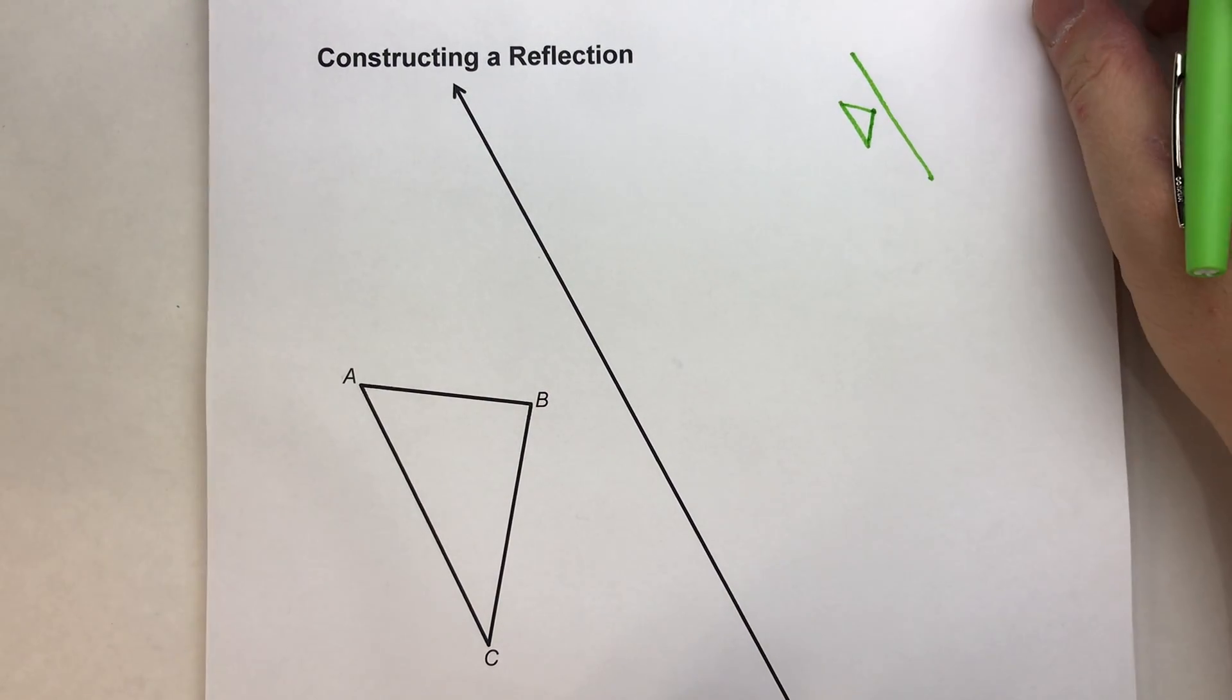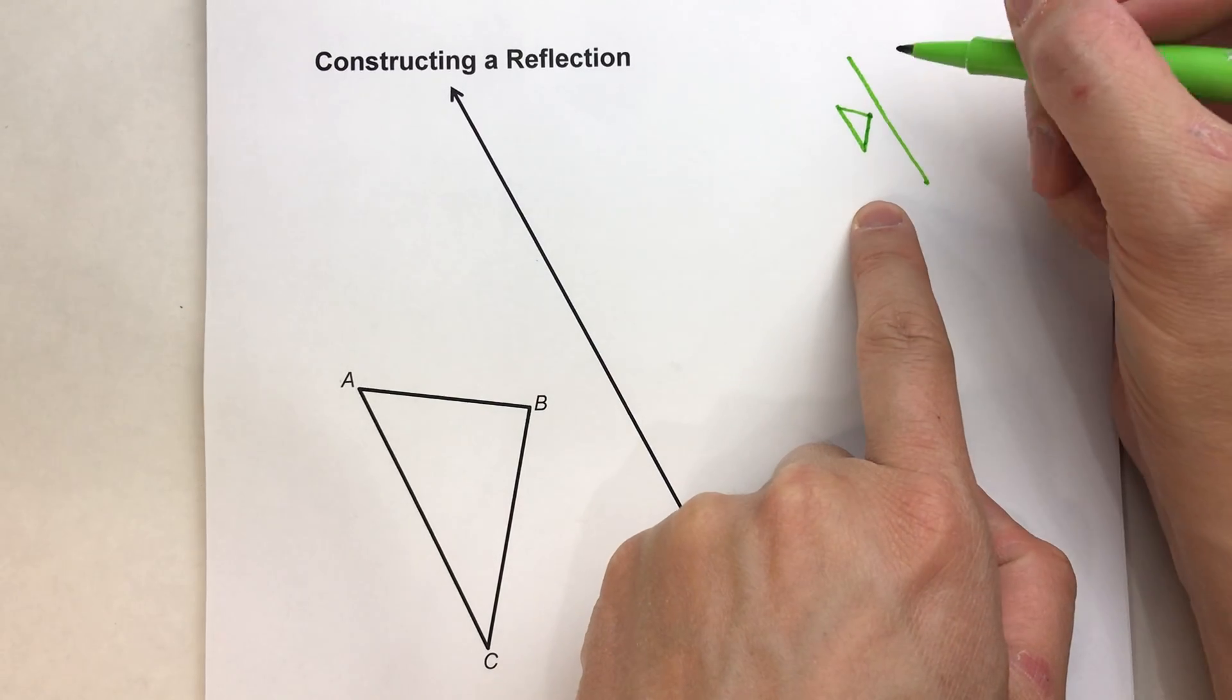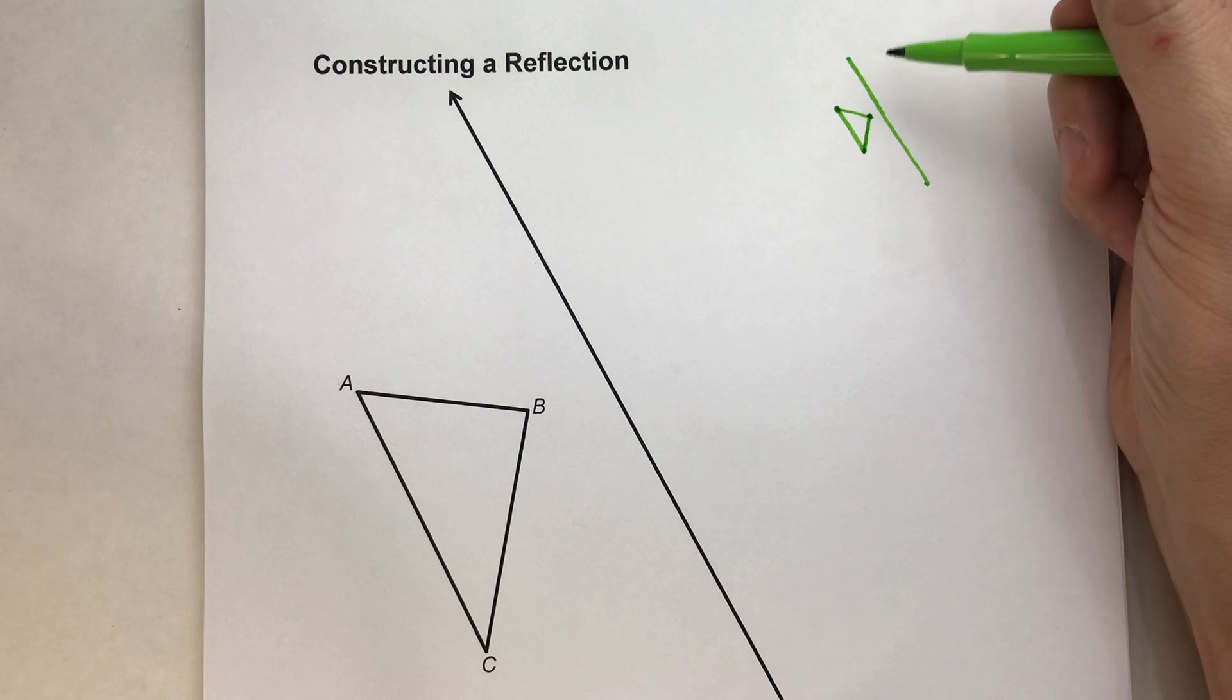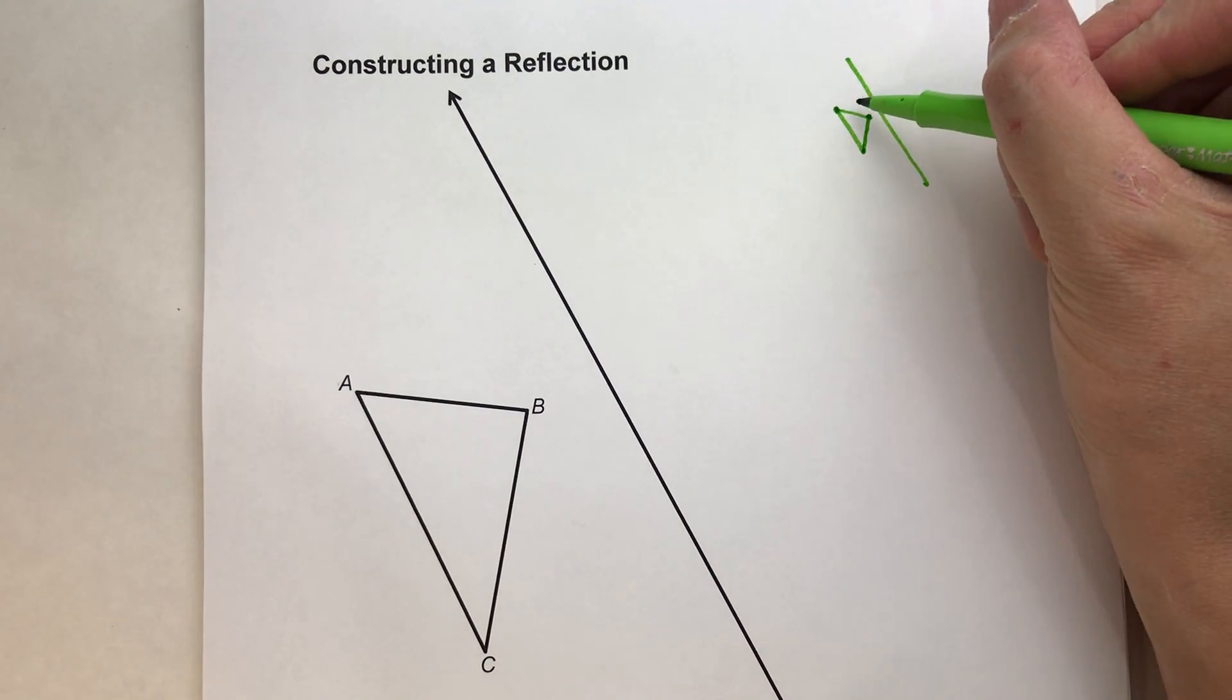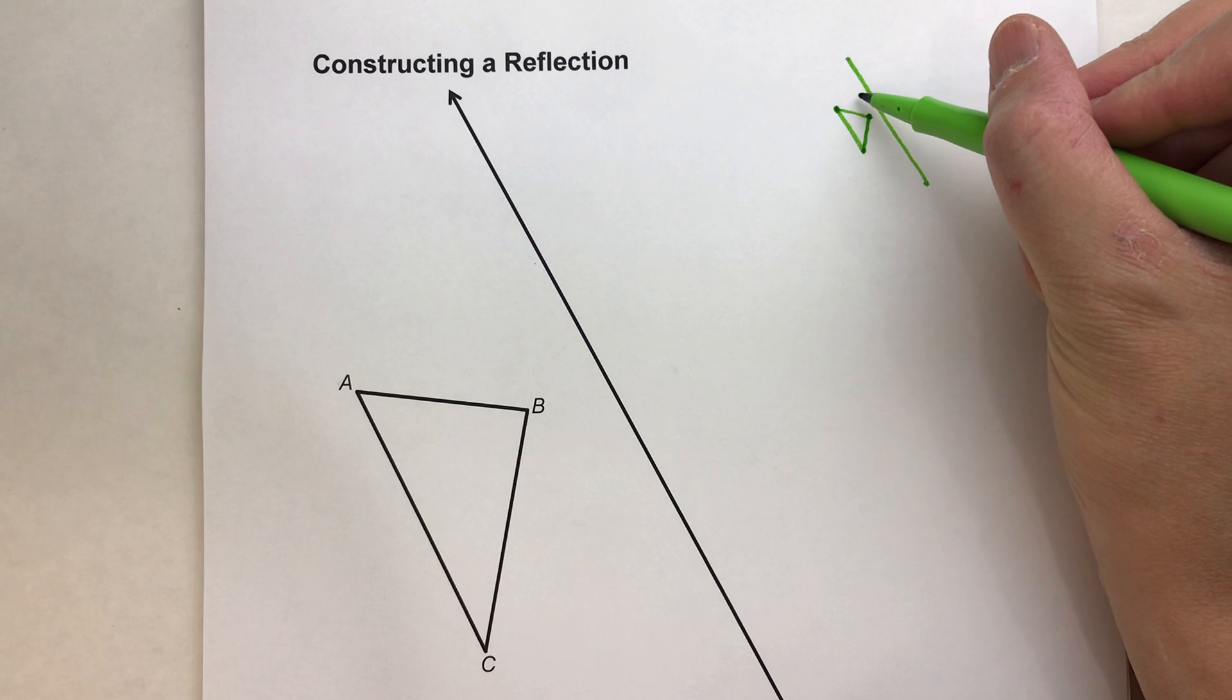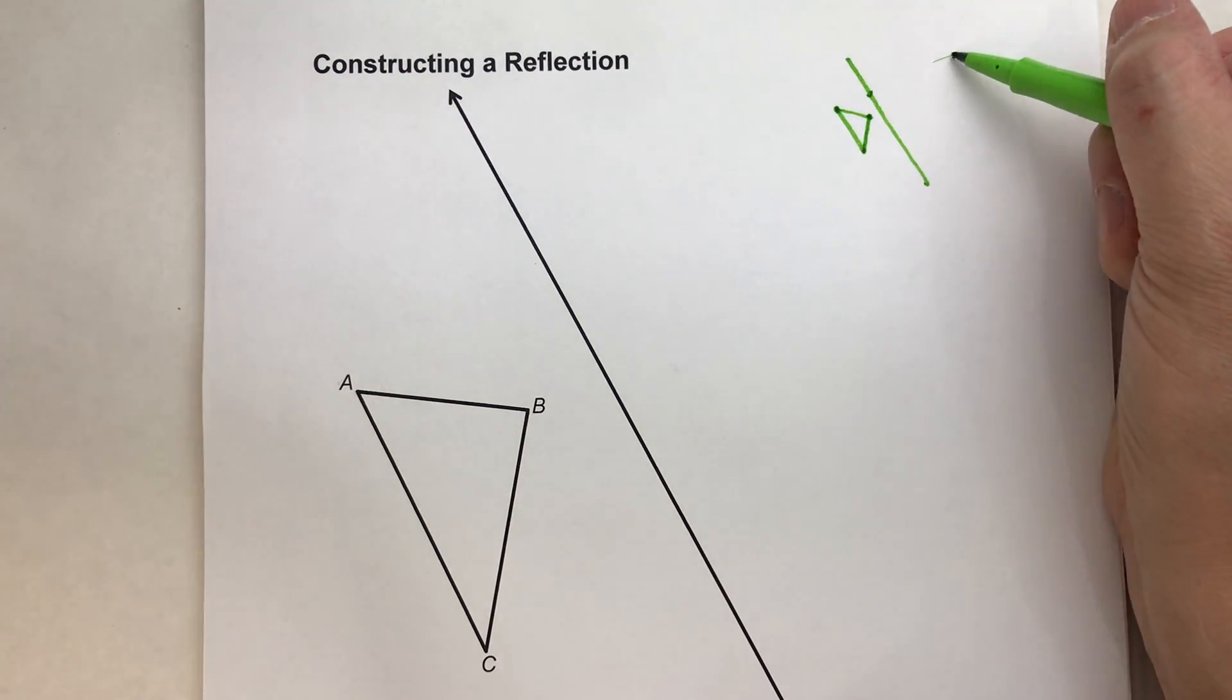Now remember what a reflection is. For a reflection, what you do is each vertex of this triangle here, what we're going to do is reflect it across the other side of this line. It's going to be the same distance from the line but on the opposite side.